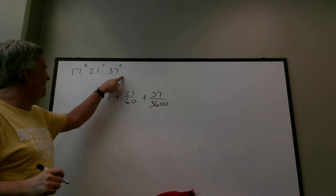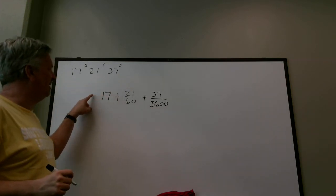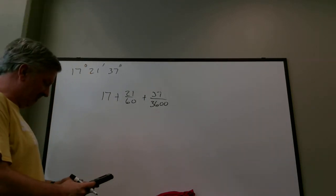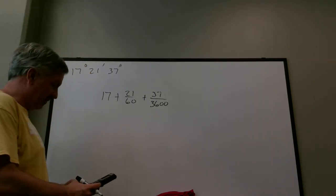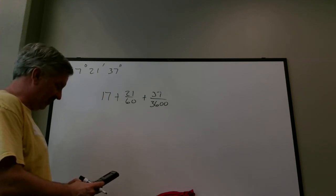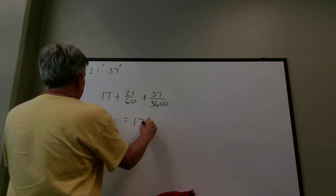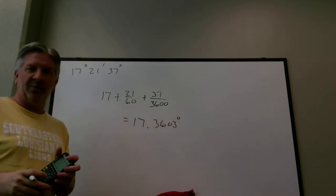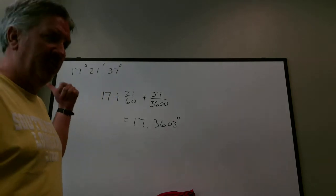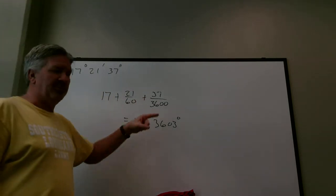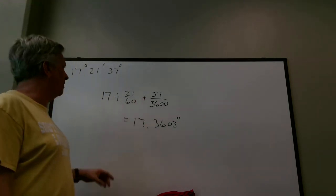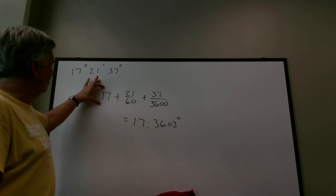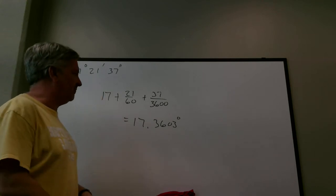So when I convert degrees, minutes, and seconds to decimal degrees, I just remember the calculation and type it in the calculator: 17 plus 21 over 60 plus 37 over 3600. That gives 17.3603 degrees, which is what we got before. You're welcome to do it the longer way — this is just how I'll do it throughout the lectures.